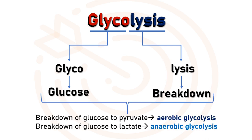It is called aerobic glycolysis. When the same breakdown of glucose is carried out under anaerobic conditions, glucose converts to lactate.